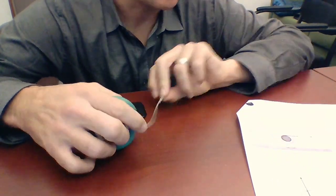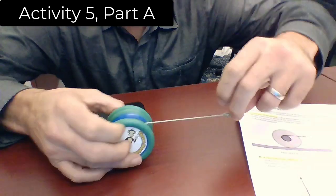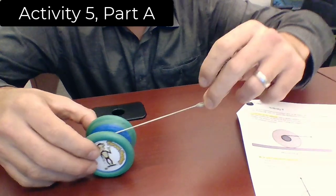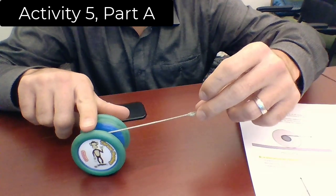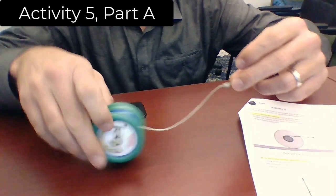So, let's start with Part A. I pull it horizontally towards the right from the top. Watch which way the yo-yo moves, or rotates. Do it a second time.